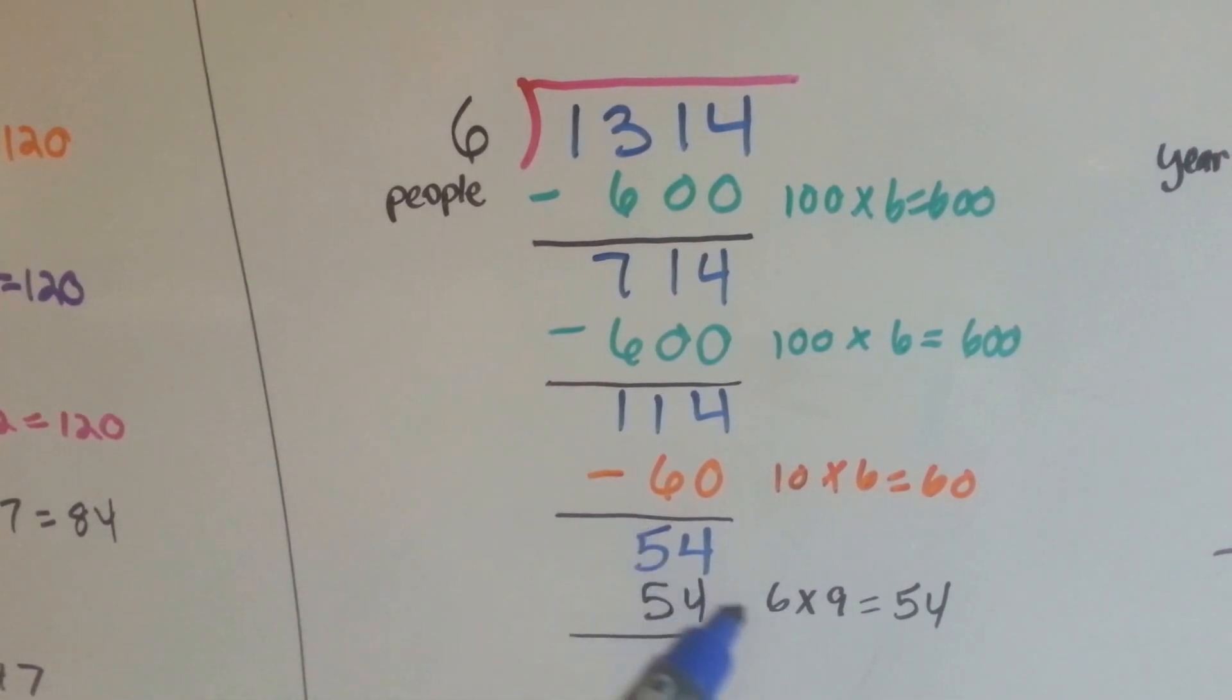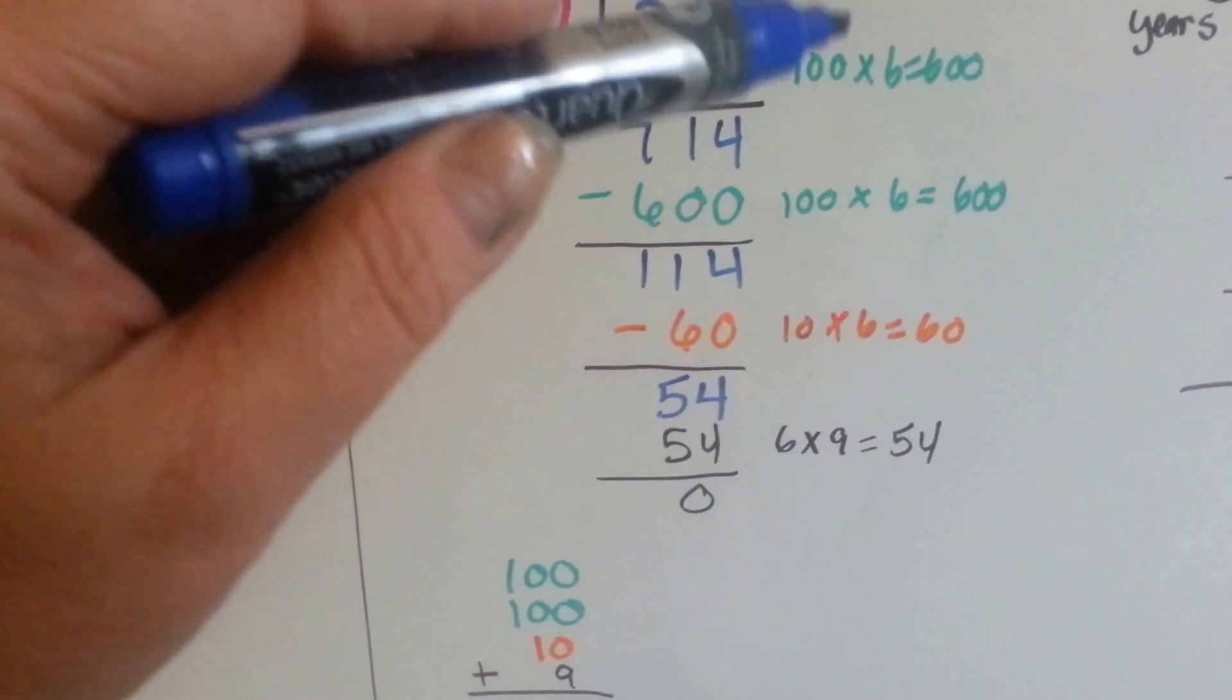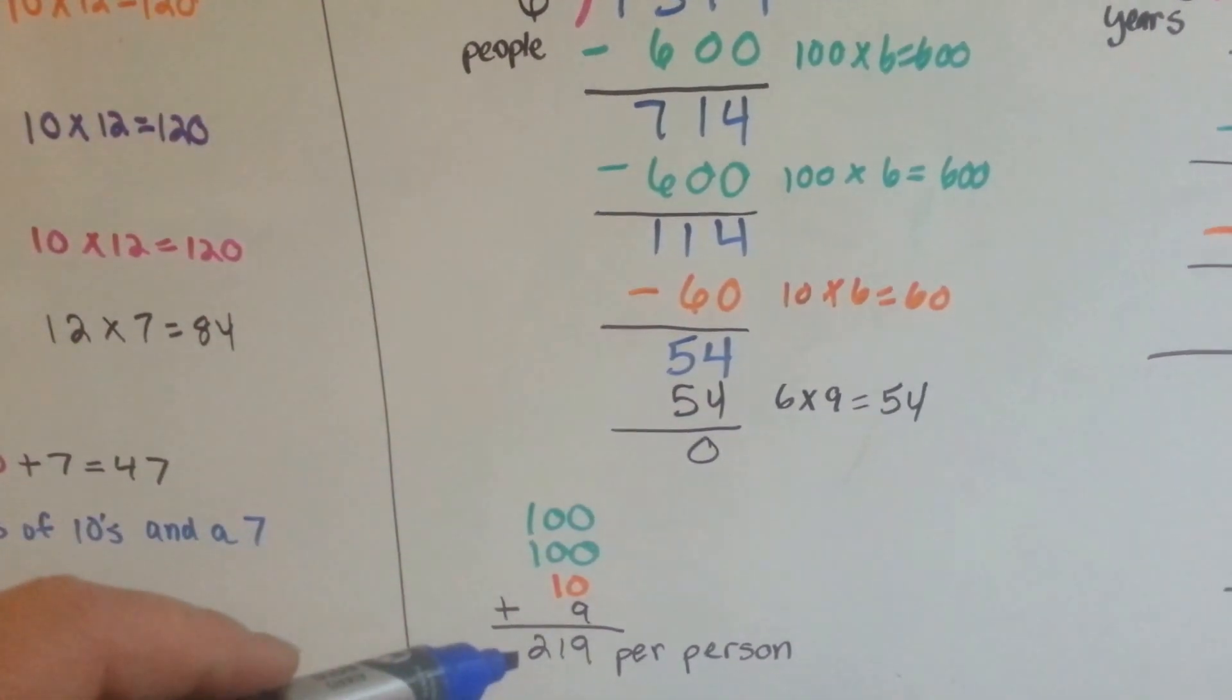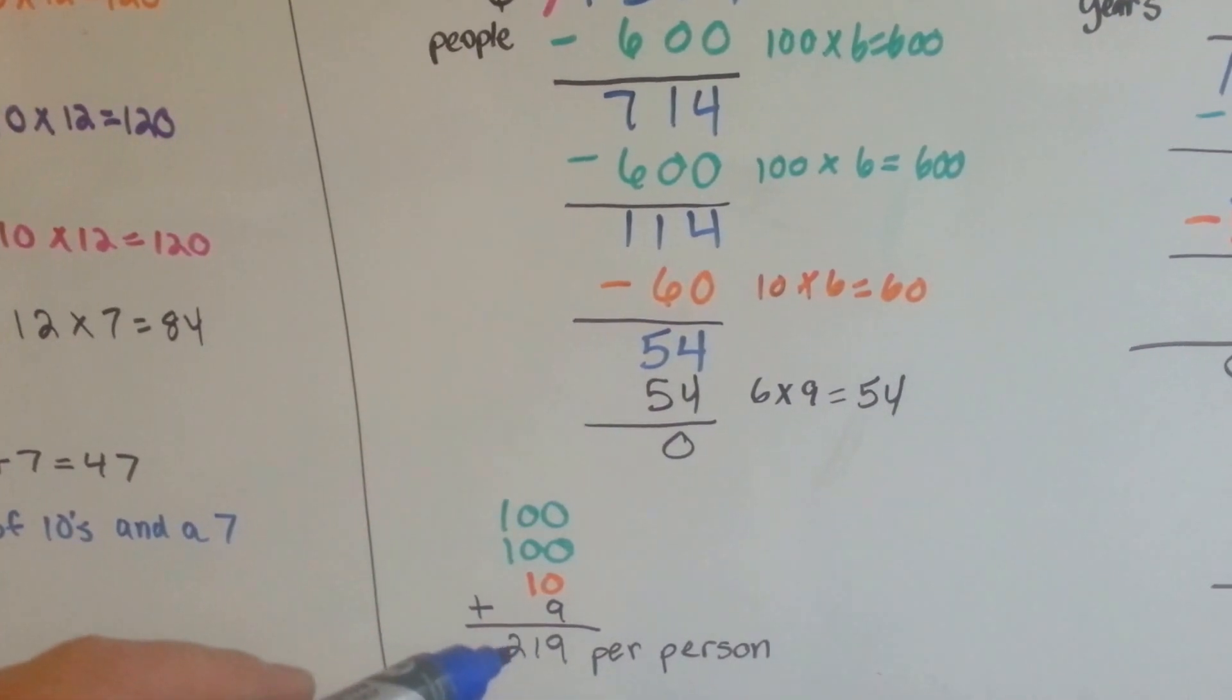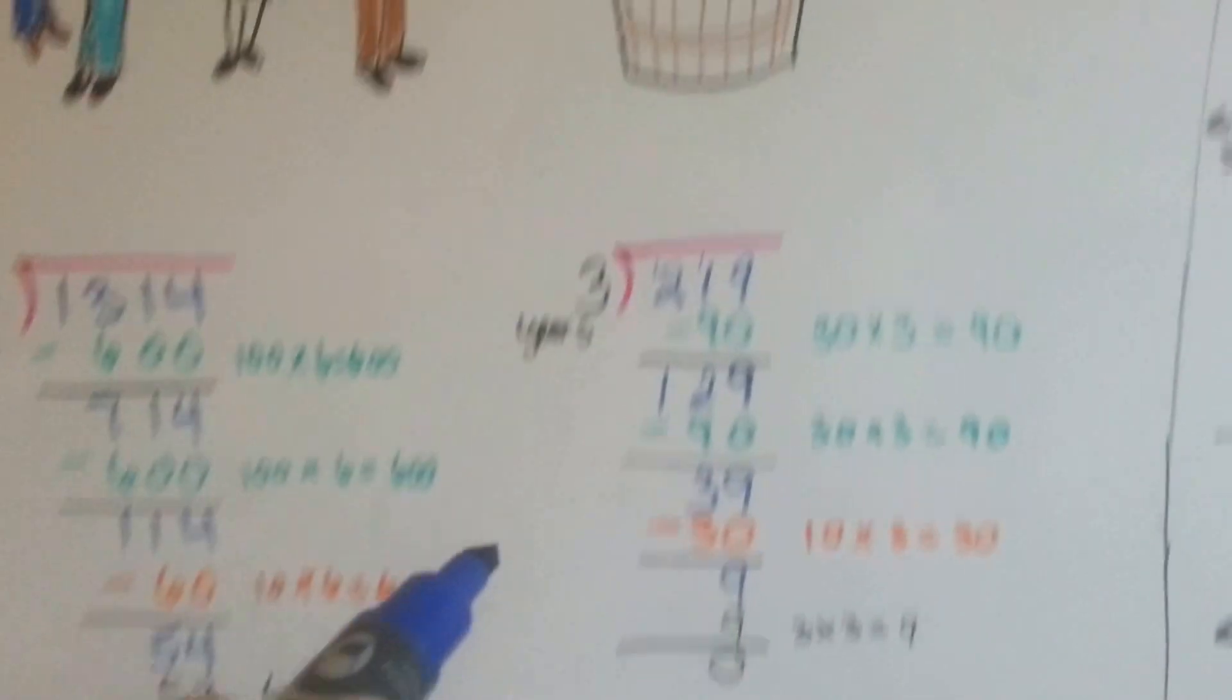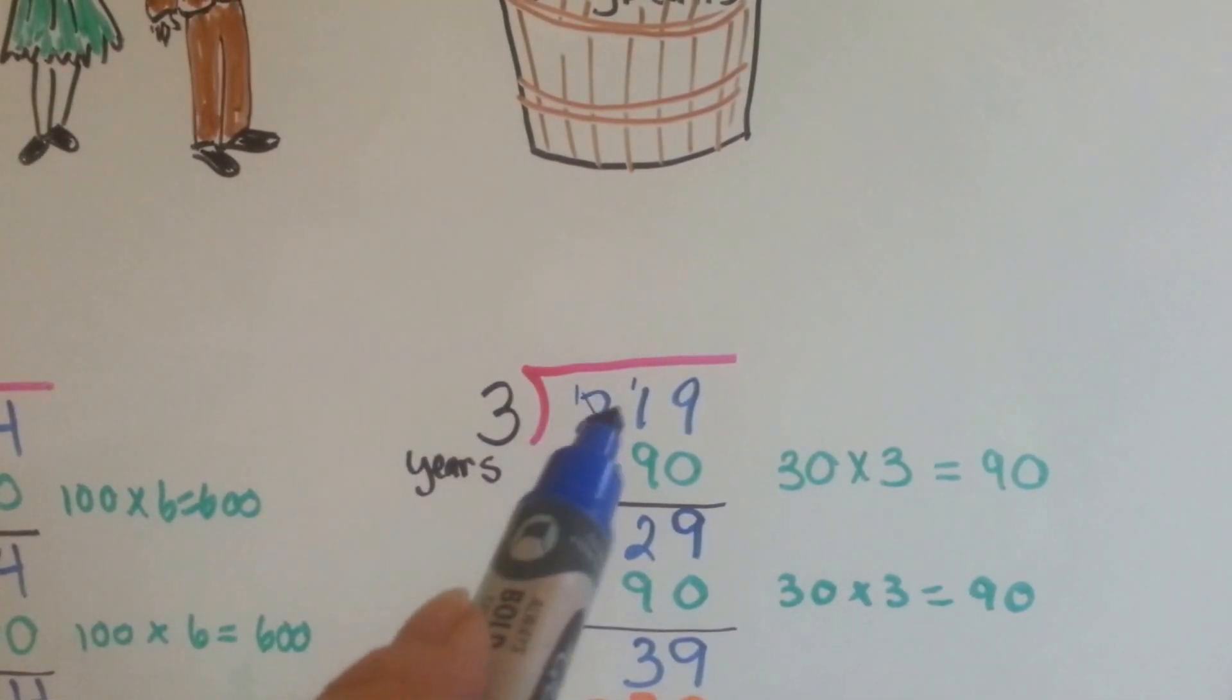That brings us to 54, and I know 6 times 9 is 54. So now we can add the 100, 100, 10, and 6, and I know that it's 219 pounds per person. That is the number we've got to divide into three because that's for three years. Now we need to find out for each year. So we have three years going into 219.